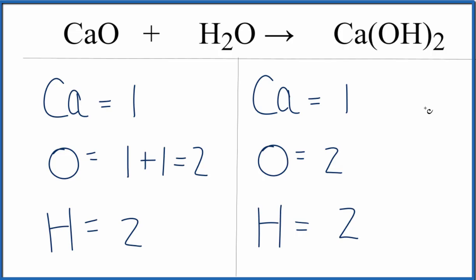And the reason people have problems with this, there's two reasons. One is they count this oxygen, then they forget about this one. Then the other problem is they don't realize that the two here applies to all of the atoms here in the parentheses, and that messes them up as well.